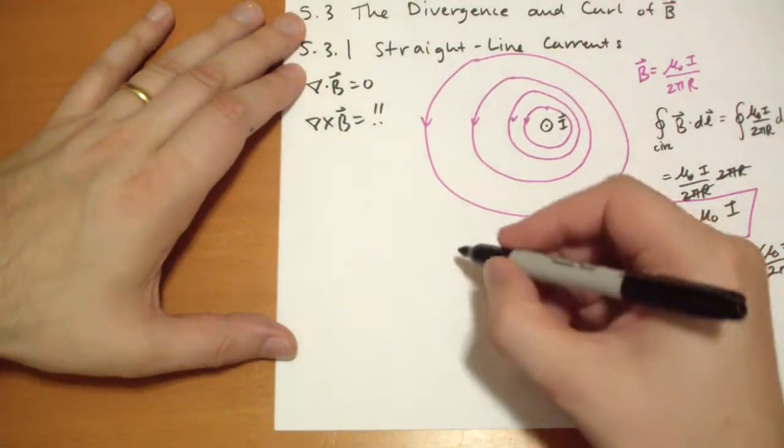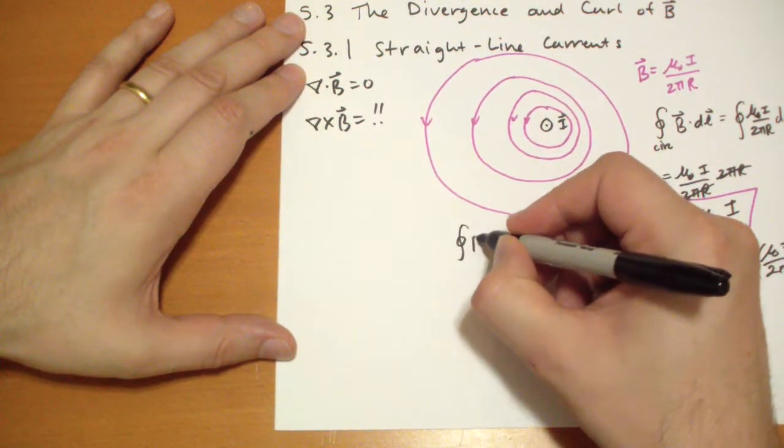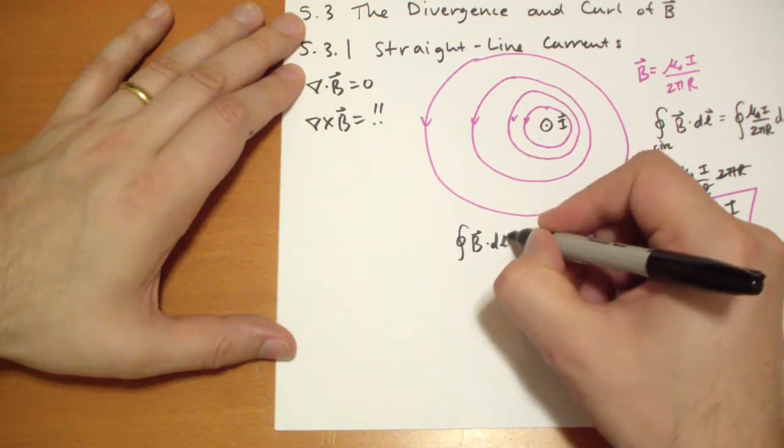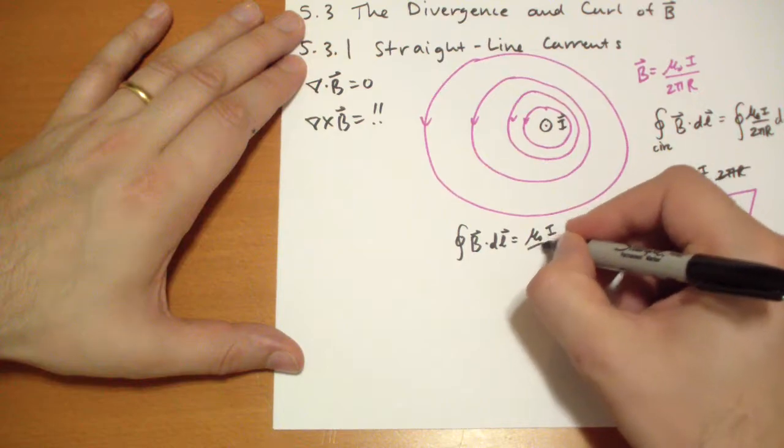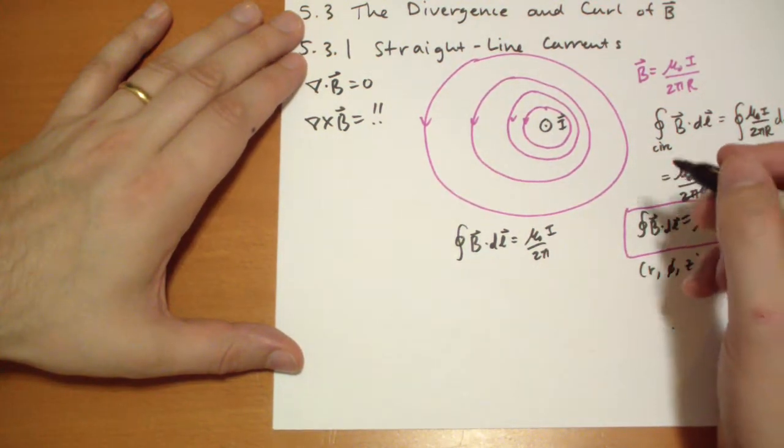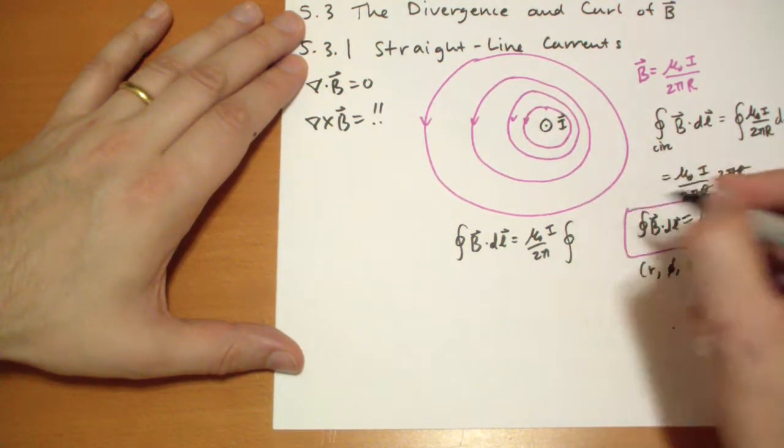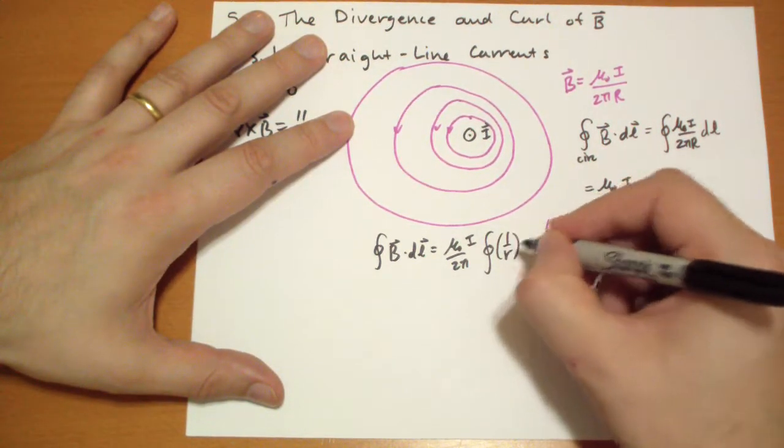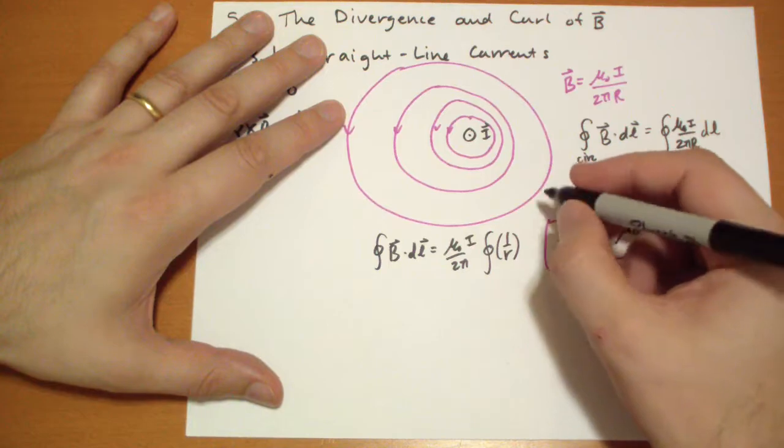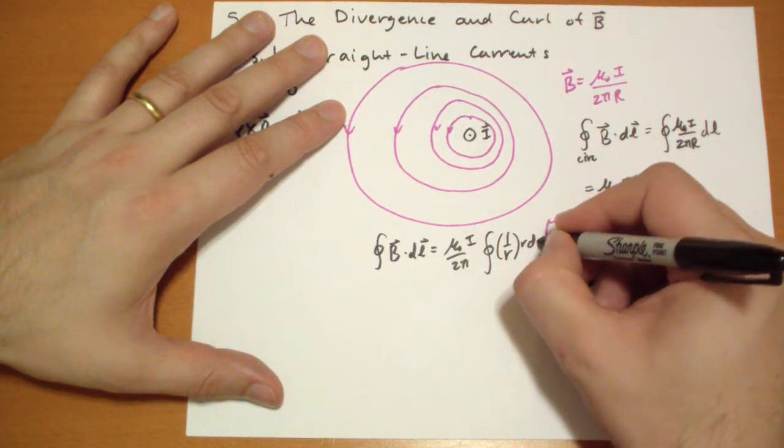So let's calculate in the general case. The integral of B vector dot DL vector is equal to μ₀I, this comes out, over 2π. And this is the closed path integral in cylindrical coordinates of this 1/R part, times the DL in cylindrical coordinates, which is R dφ.